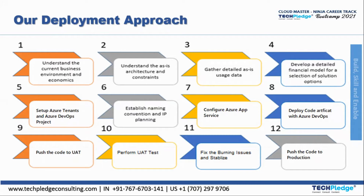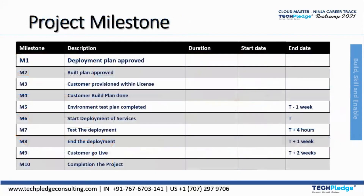These are the 12 project execution phases we go through in our deployment approach. I need all of you to look over these phases so that you can understand how we are going to plan and execute a project. Now let's move to the next topic: project milestones. Every project comes with its milestones, and there will be a deadline for each and every milestone because there is a project deadline.